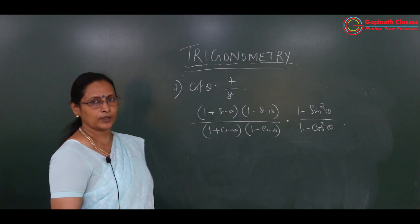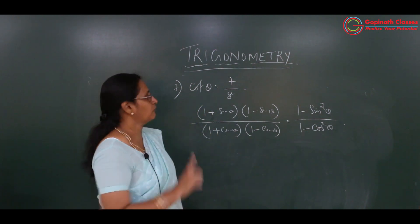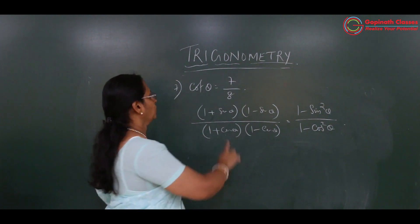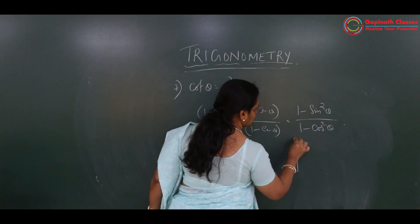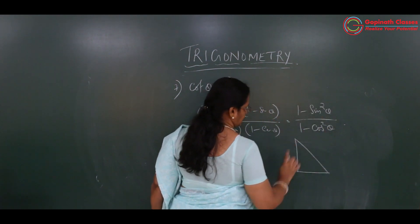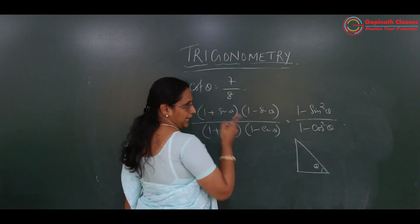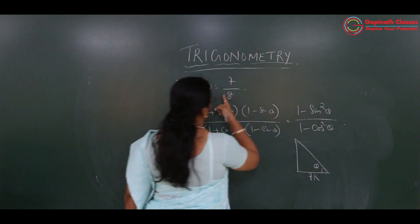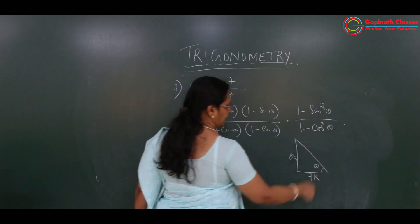So 1 plus sin theta into 1 minus sin theta is nothing but 1 minus sin square theta, upon 1 plus cos theta into 1 minus cos theta which is 1 minus cos square theta, using the identity A plus B into A minus B equals A square minus B square. Now cot theta is given as 7 upon 8, so let's draw the triangle.